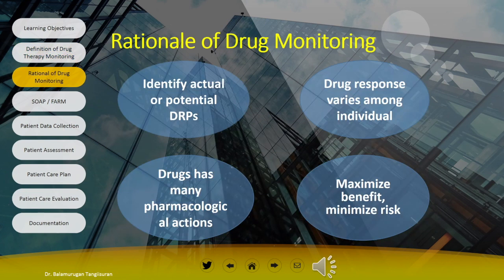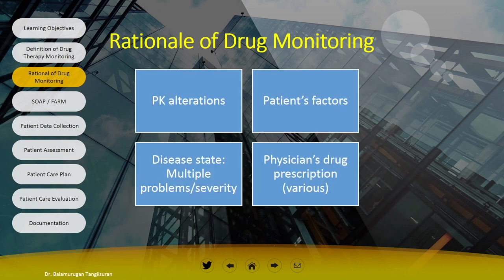What are the rationales for doing drug therapy monitoring? We have to make sure the pharmacist is in the right place to identify actual or potential drug-related problems. Also, drugs have many pharmacological actions and drug response varies among individuals. There are changes in pharmacokinetics and pharmacodynamics that vary among patients — it differs in the elderly compared to younger populations. We as pharmacists should be able to rationalize these changes and provide better patient care.